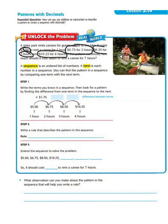Coming down to our problem, we see that the first hour is $5, $6.75 for two hours, $8.50 for three hours, and $10.25 for four hours. We have to look at the difference between each term. These numbers in the sequence are called terms, and this entire set is what's known as the sequence.